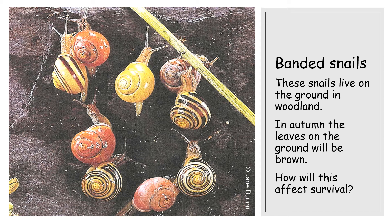That's not the same in other populations. For instance, these banded snails are a species that live on the ground in woodland — you may have seen them in your gardens. In autumn they live on leaves on the ground and they'll be brown. If you were a bird going to eat a snail, a yellow one right in the middle stands out a mile, while others are more camouflaged and therefore less likely to be picked off. The yellow snail is less likely to survive, less likely to reproduce, and less likely to pass its genes on, whereas the brown snails are more likely to reach reproduction age and pass on their genes.